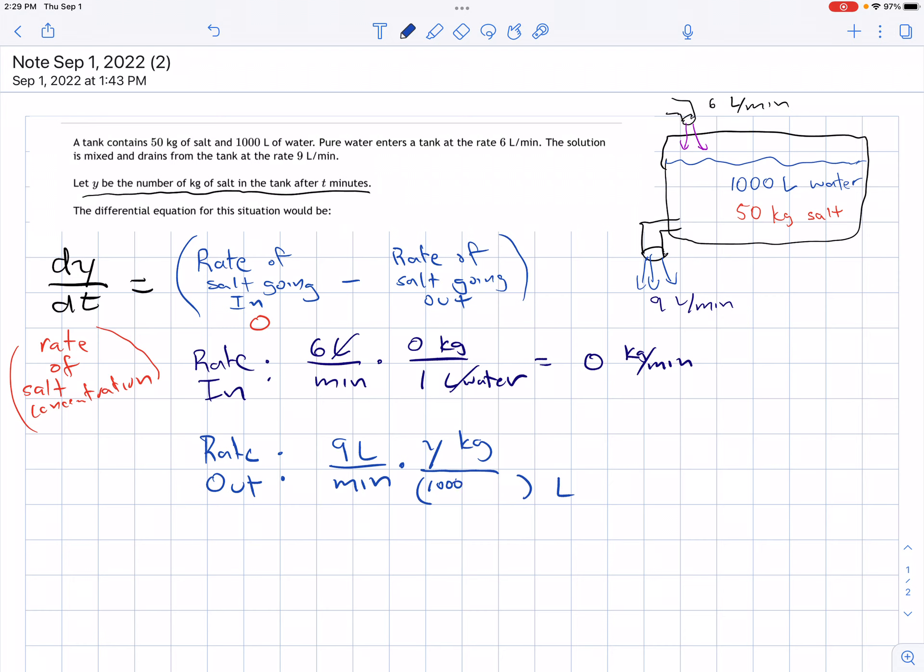For that volume, we start with 1000 liters of the mixture. Over time, we're adding water at 6 liters per minute and losing mixture at 9 liters per minute. So the volume is 1000 plus 6 minus 9, which is 1000 minus 3t liters. The rate out simplifies to 9y over (1000 - 3t) kilograms per minute.